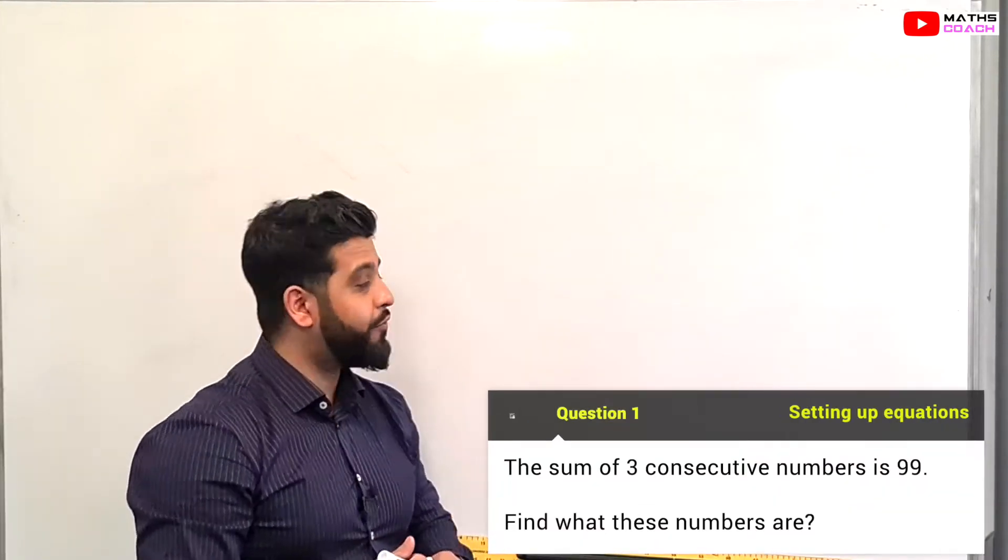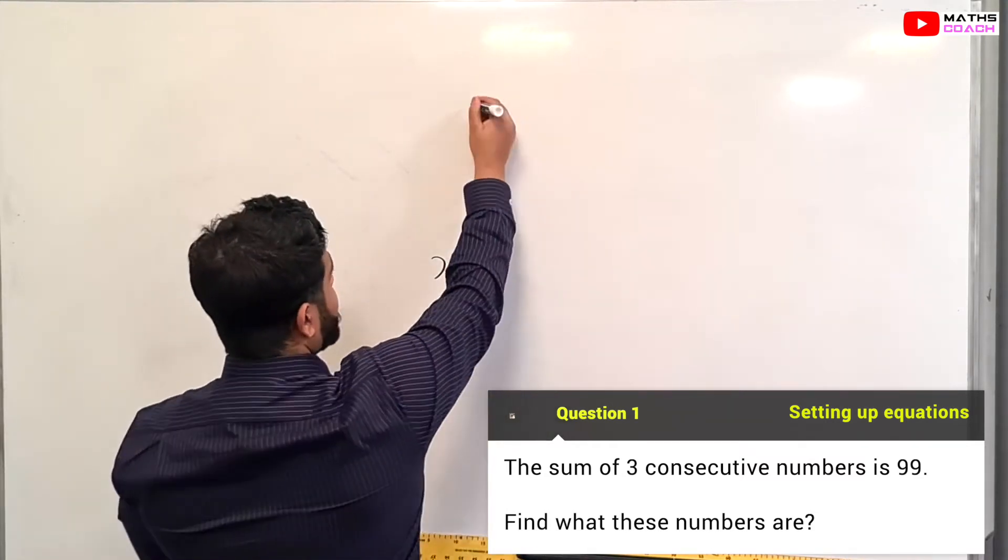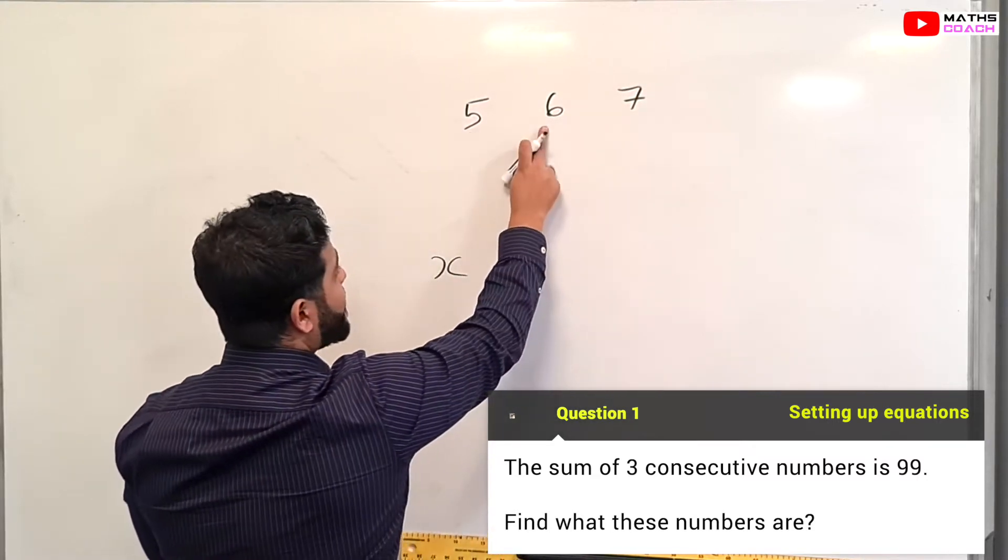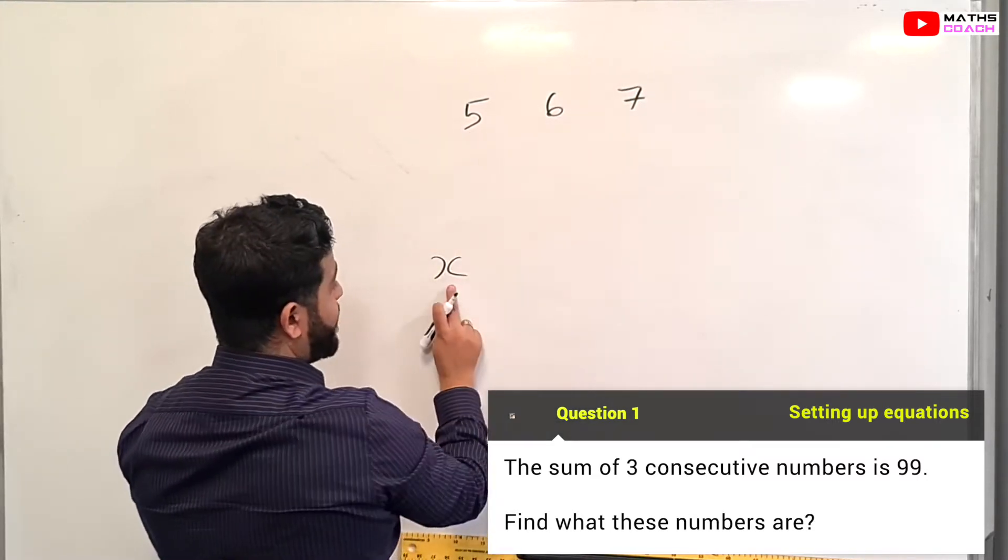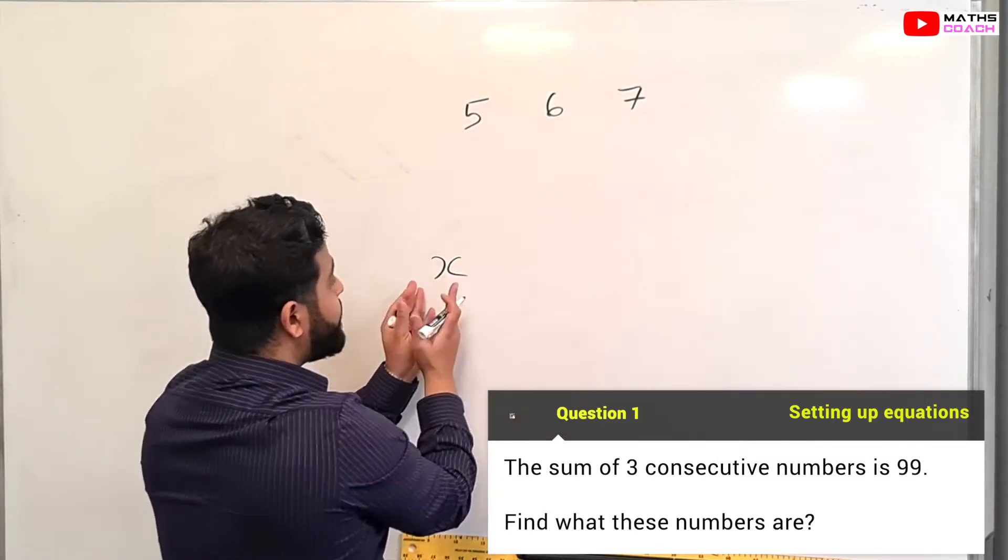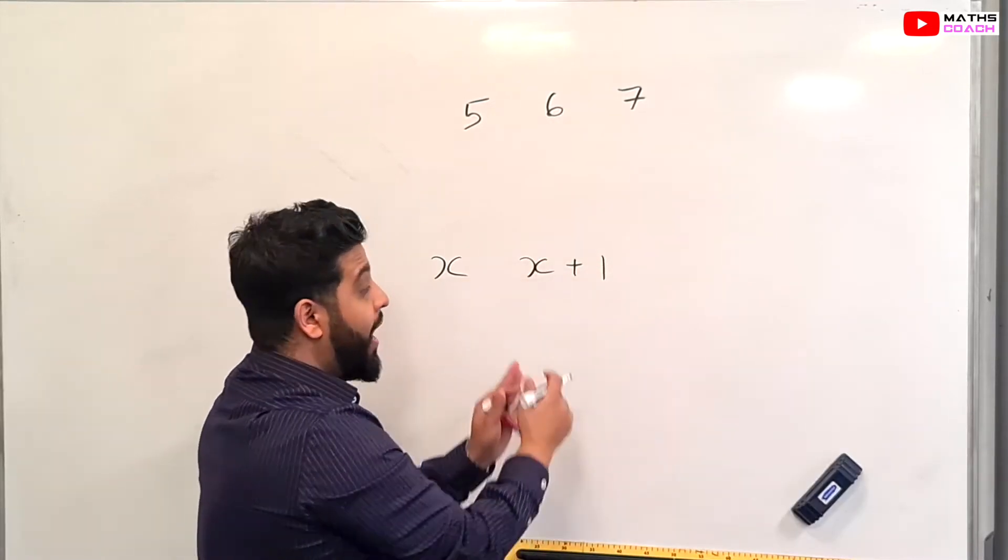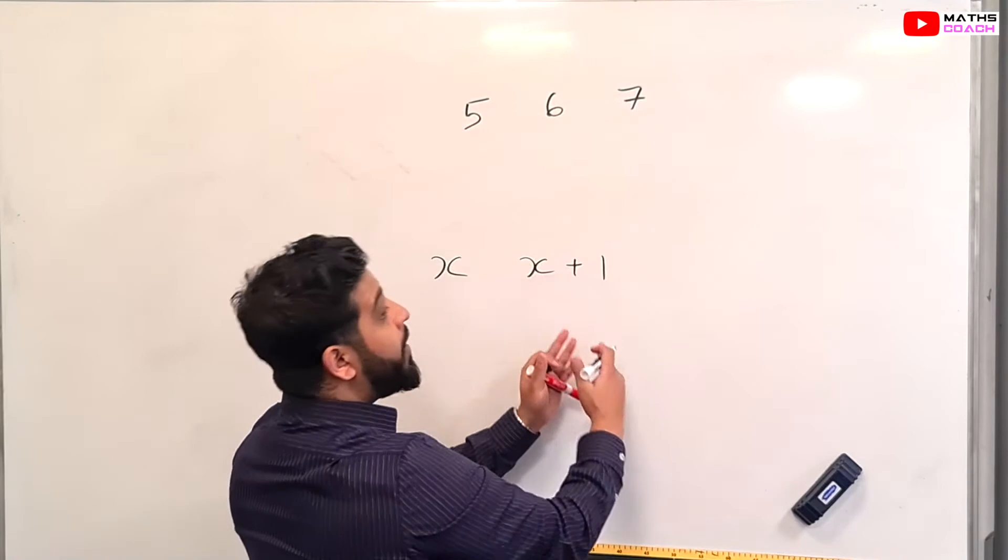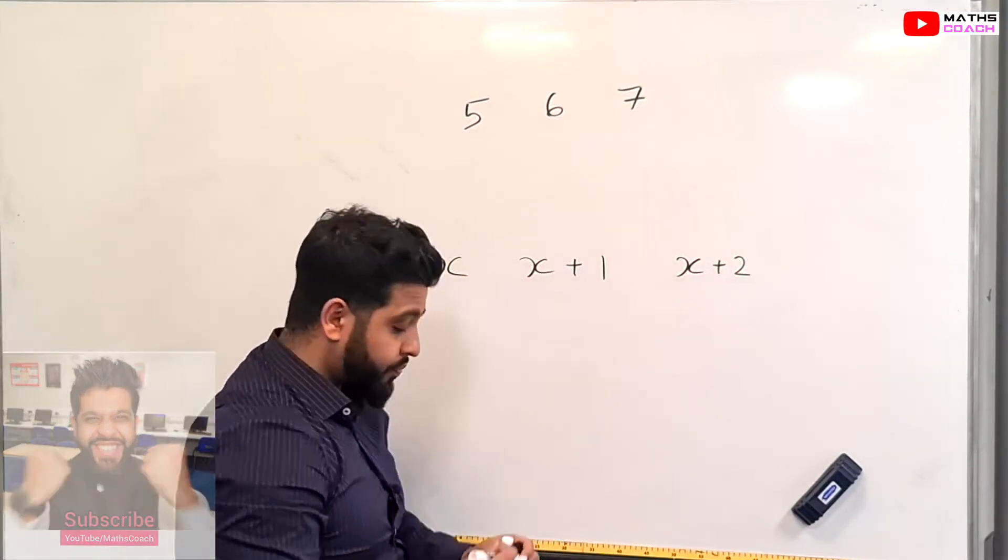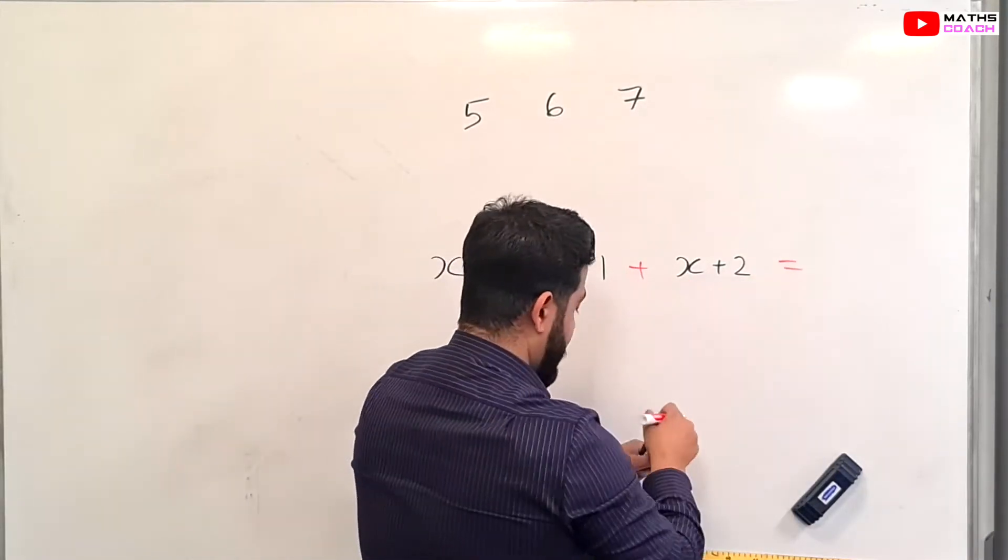So let's begin by forming an equation. If we say X is our first number, for example, if we have three numbers next to each other, like 5, 6 and 7, the number after 5 is 6. Therefore, if X is our number that we start with, it could be anything. This is just an example. The number after X would be X plus 1, and the number after that would be X plus 2. And we are told that they all add up to give us 99.